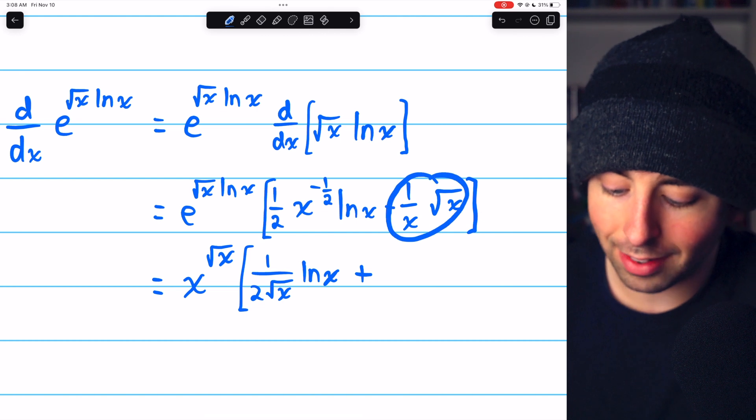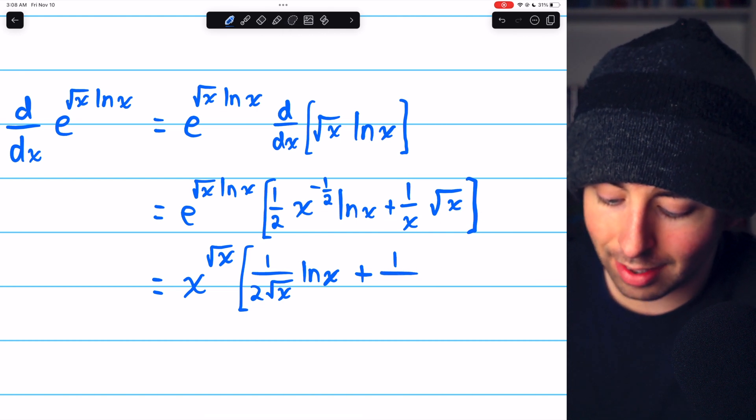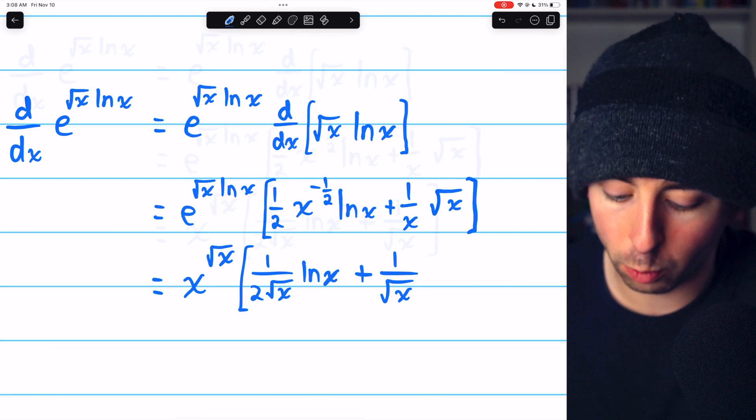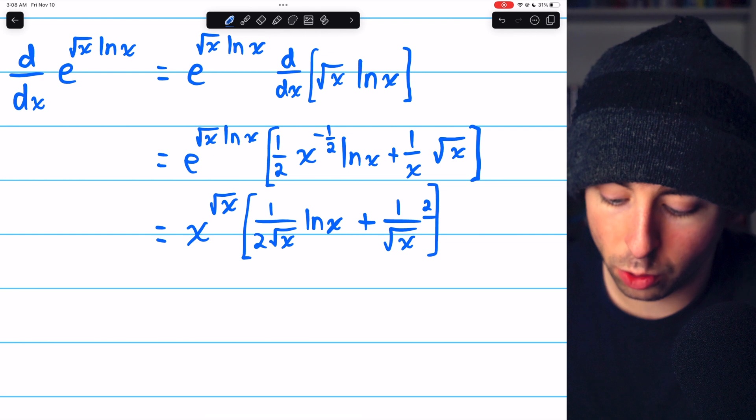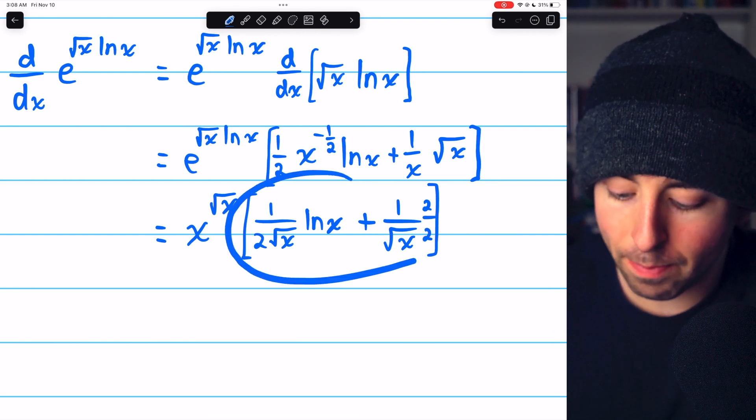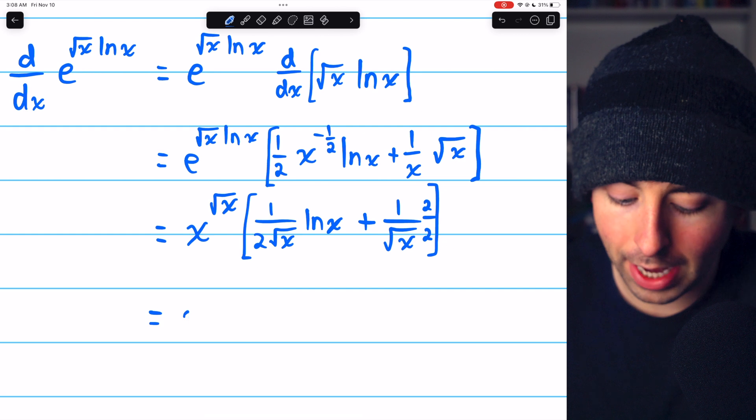And one over x times root x is the same as one over root x, using our exponent rules. And so if we multiply this term on the right by two over two, then we can combine these fractions because they'll have the same denominator.